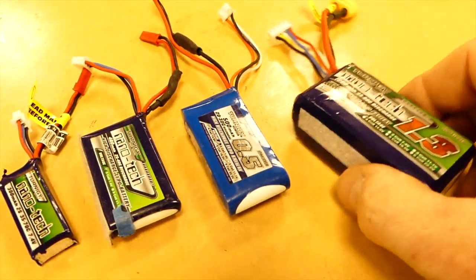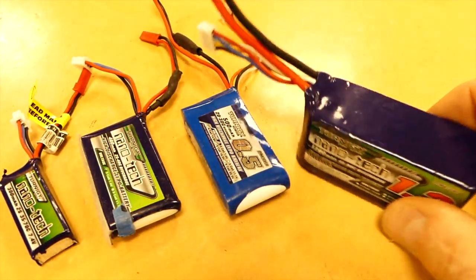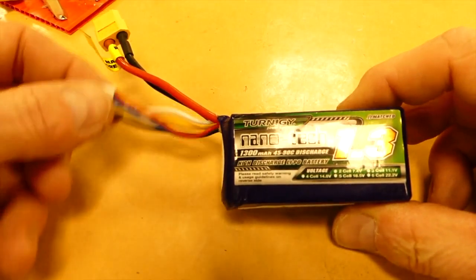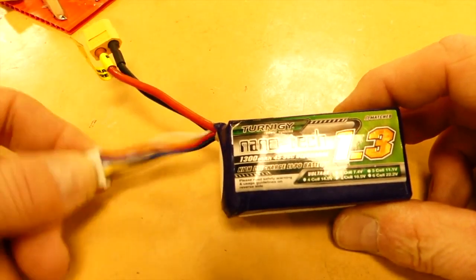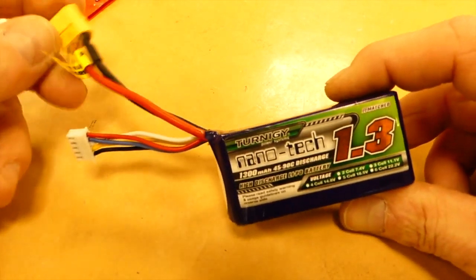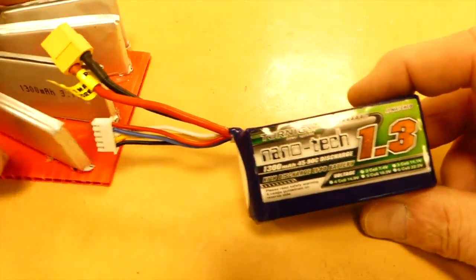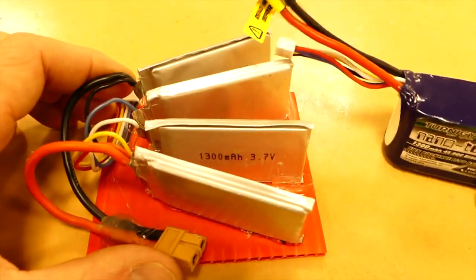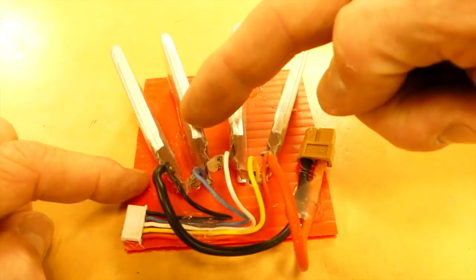For this course we use lithium polymer batteries, also called LiPos. They all have two connectors, one with three or five wires and one with just two. On the large battery, these two wires are quite thick. Inside are several pouch cells, basically smaller batteries that are connected in series to create a higher voltage.